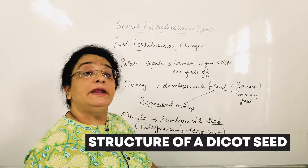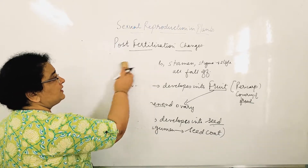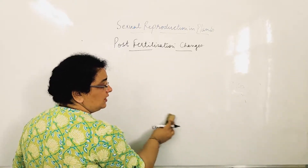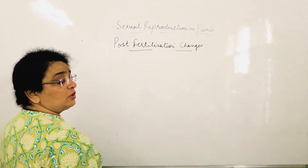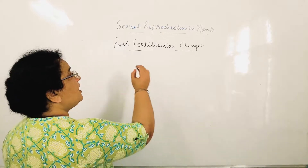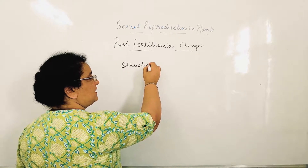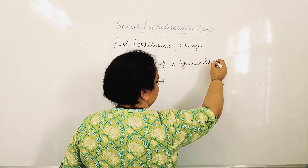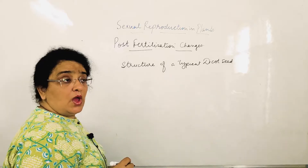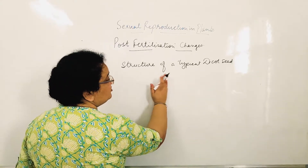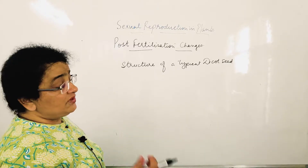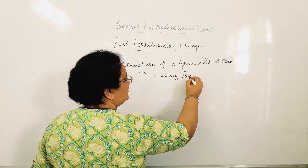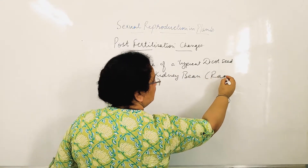Now we will talk about the structure of a seed — specifically the structure of a dicot seed. Monocot seeds like maize, rice have a single cotyledon. But here we are discussing the structure of a typical dicot seed. For a dicot seed you can take rajma or chana. Here I will take rajma, that is the kidney bean. So the example is kidney bean — in Hindi we call it rajma.